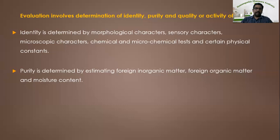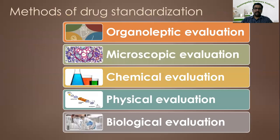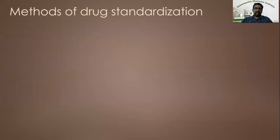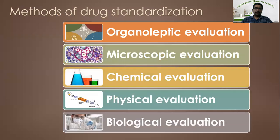Regarding quality, it should be determined by physical, chemical, and biological methods. Now let us see the methods of drug standardization. Methods of drug standardization involve five evaluation methods: organoleptic evaluation, microscopic evaluation, chemical evaluation, physical evaluation, and biological evaluation. In this session, we are going to discuss about organoleptic evaluation and biological evaluation.